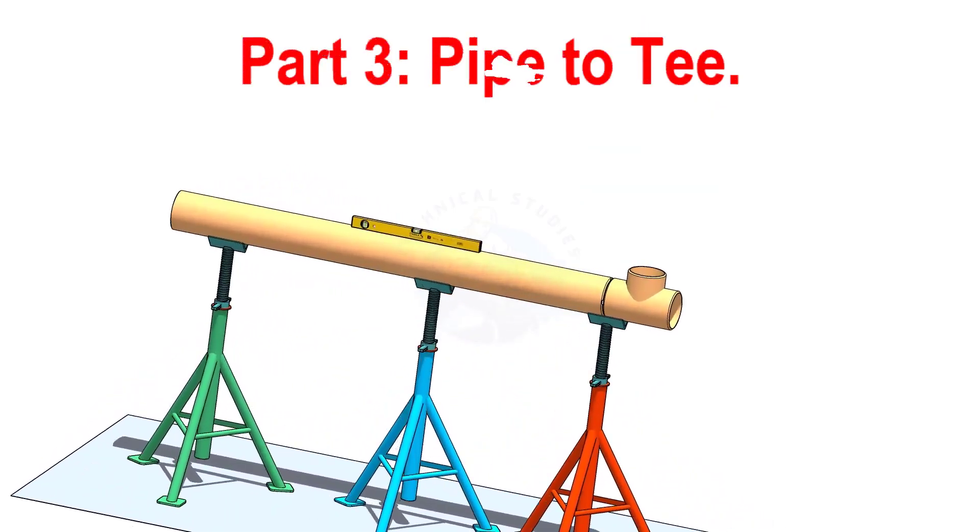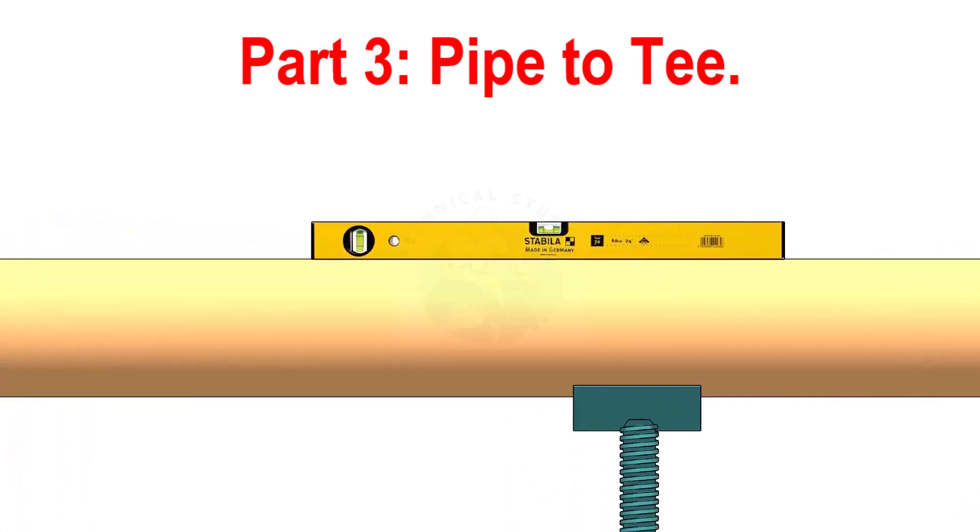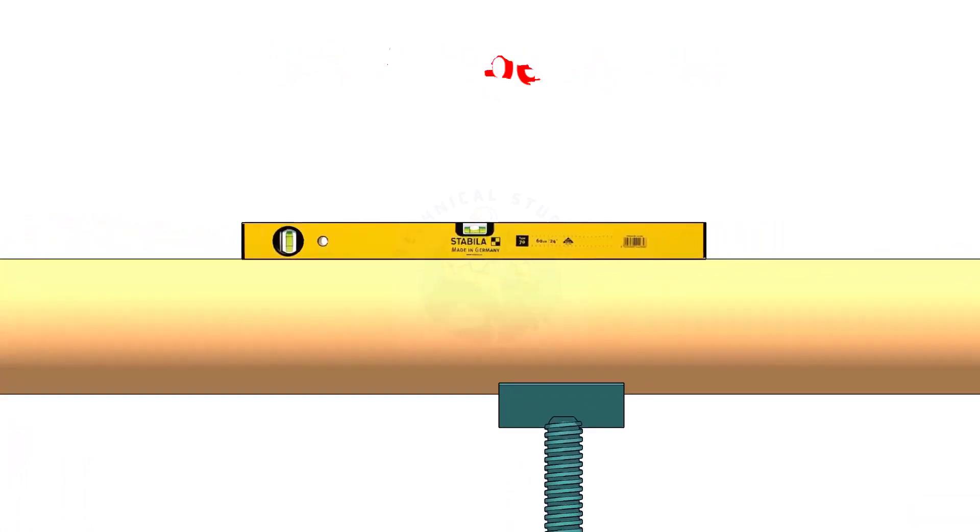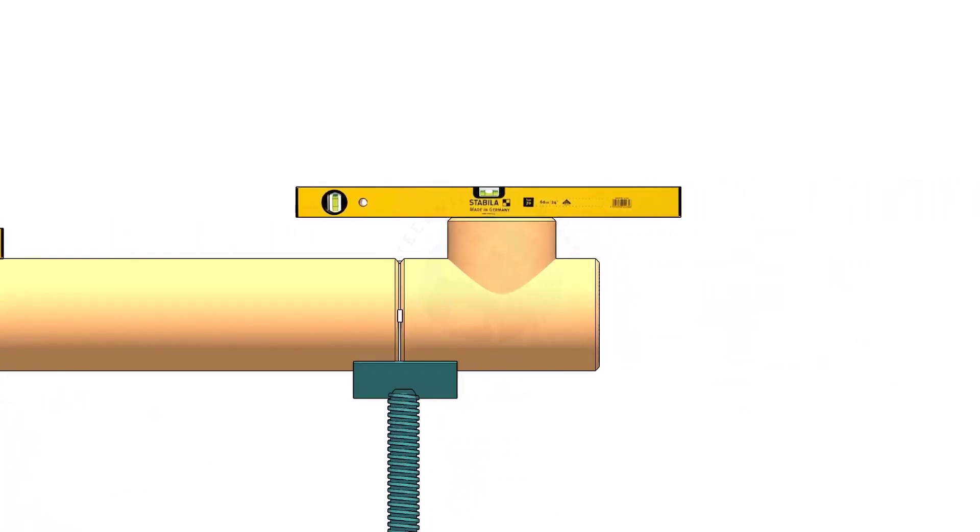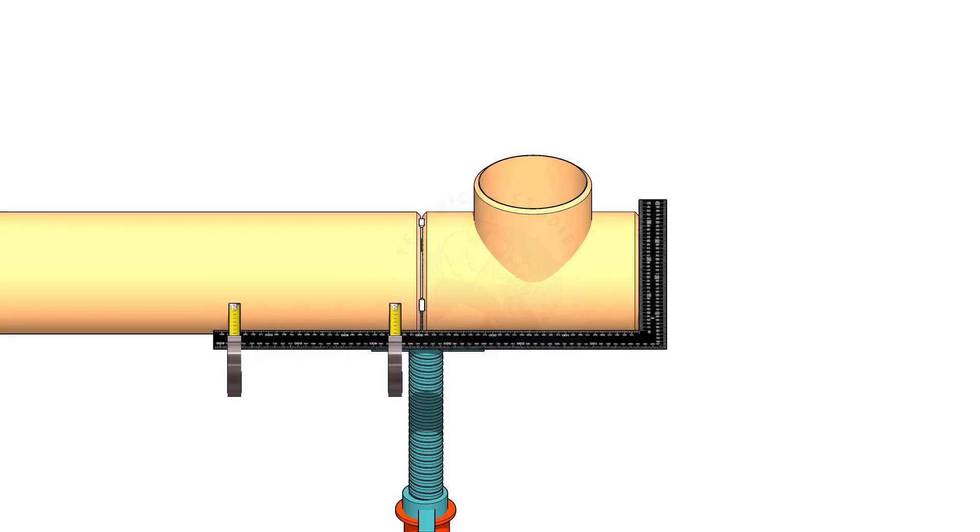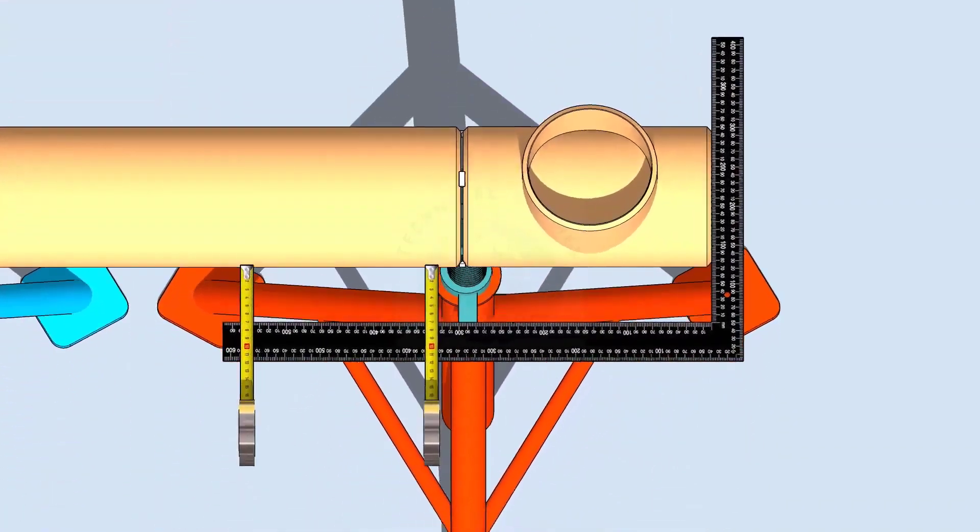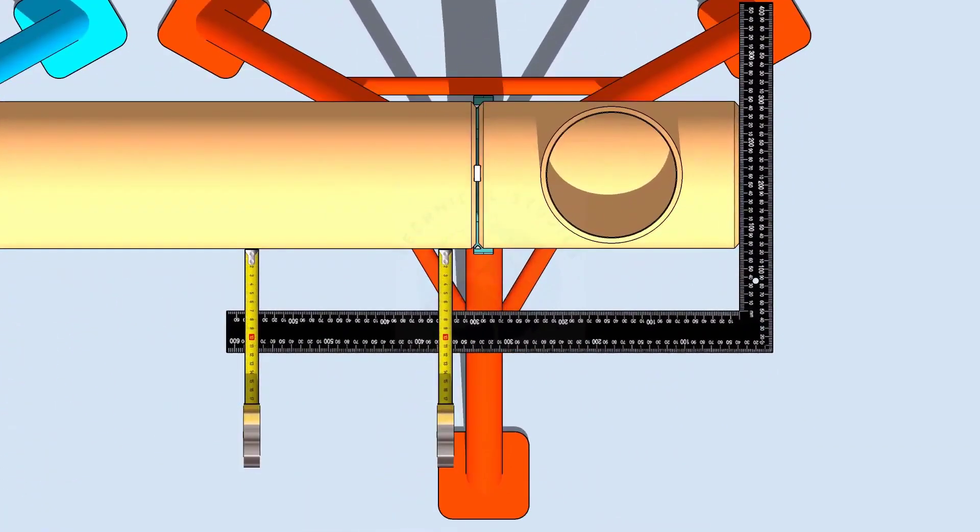When you check a pipe to T fit up, level the pipe first. Then check the level of the T. After that, hold a large right angle on the face of the T and measure if the distances are the same.